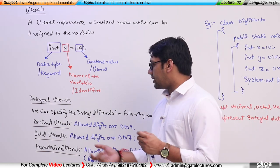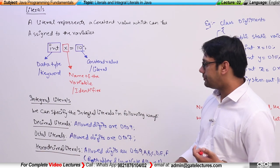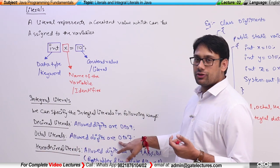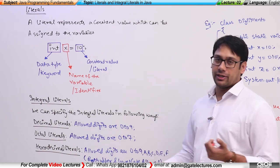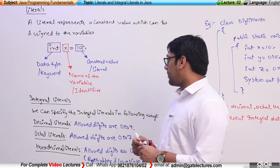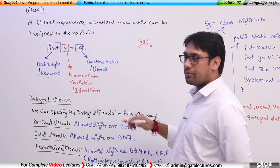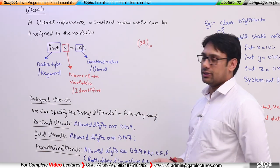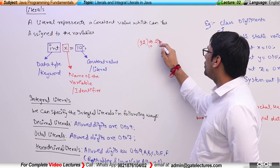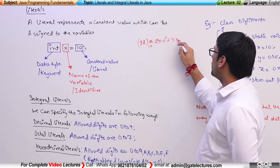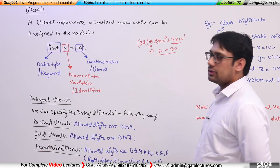In a decimal literal, digits 0 to 9 are allowed. In an octal literal, digits 0 to 7 are allowed. In a hexadecimal literal, digits 0 to 9 and A to F are allowed. For example, 32 in base 10 (decimal) equals 2×10⁰ + 3×10¹, which is 2 + 30 = 32.